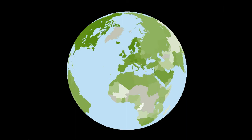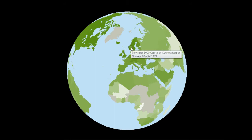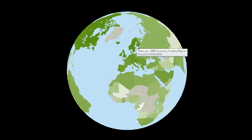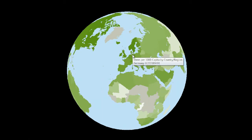Looking by region, all of the countries in Europe have pretty high viewership. Here's Norway at 0.67 views per 1,000, Sweden 0.67. Here's Finland at 0.31 to 0.32. Germany is 0.22 views per 1,000.